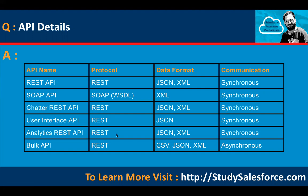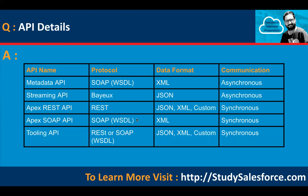Analytics REST API: protocol REST, data format JSON and XML, communication synchronous. Bulk API: protocol REST, data format CSV, JSON, XML, communication asynchronous. Metadata API: protocol SOAP, data format XML, communication asynchronous. Streaming API: protocol Bayeux, data format JSON, communication asynchronous.